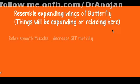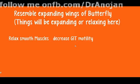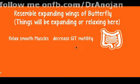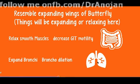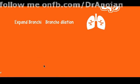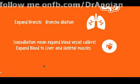Beta-2 relaxes the smooth muscles of the GIT, resulting in decreased GI motility and decreased movement of food. It causes bronchodilation, expanding the caliber of the bronchioles - like a butterfly expanding its wings. It also causes vasodilation toward the liver and skeletal muscle, so blood is pumped more toward muscles and liver.